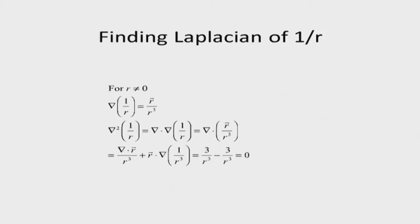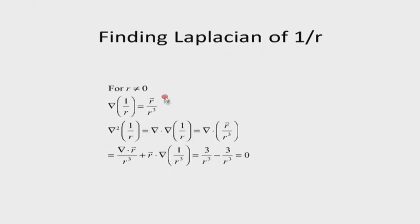One reason I introduced the delta function is to tell you what the Laplacian operating on 1/r is. The quantity 1/r is the Coulomb potential, so it is very important. For r not equal to zero, 1/r is not defined at r = 0. Since this is just a function of r, gradient is d/dr, giving minus r-vector / r³, or 1/r² times the unit vector. Then del-squared is del-dot-del of this.